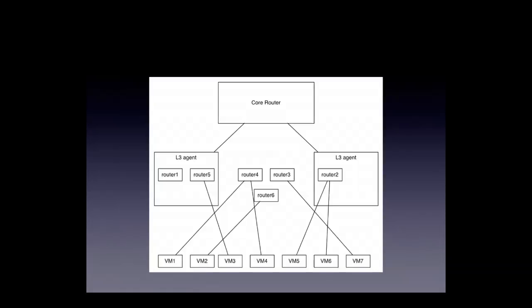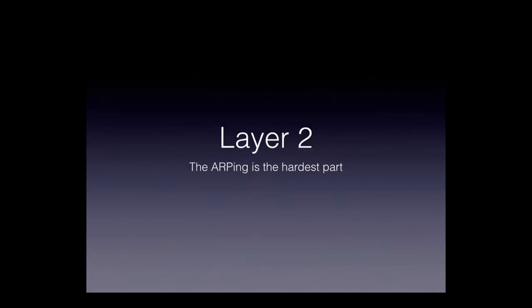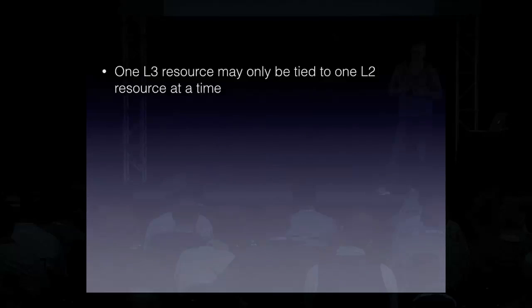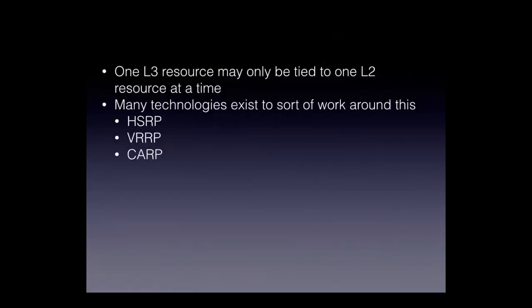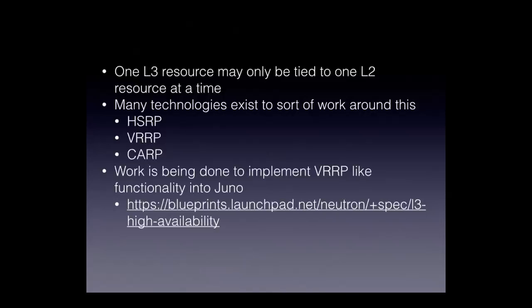The problem we're trying to solve is where do you put orphaned routers? Layer two is what we actually have to deal with, and ARPing is definitely the hardest part. One L3 resource can only be tied to a single L2 resource at a time — you have one IP and one MAC. If you want to change that pairing, you've got to tell the switch. There are technologies that try to work around this, like HSRP, VRRP, and CARP, but there's nothing integrated into OpenStack today that gives seamless layer 3/layer 2 failover.